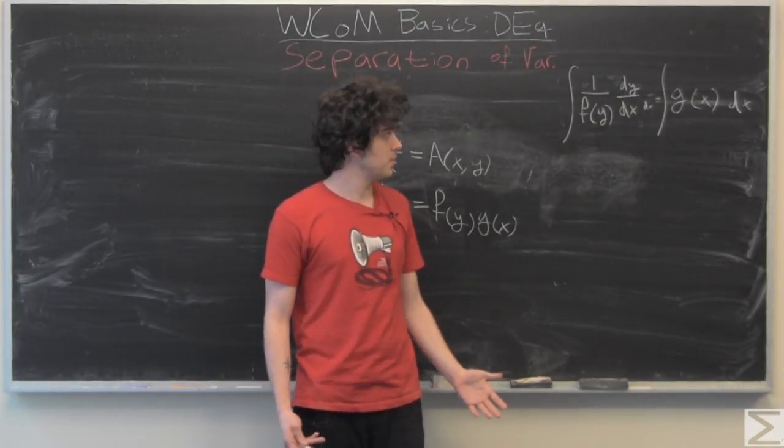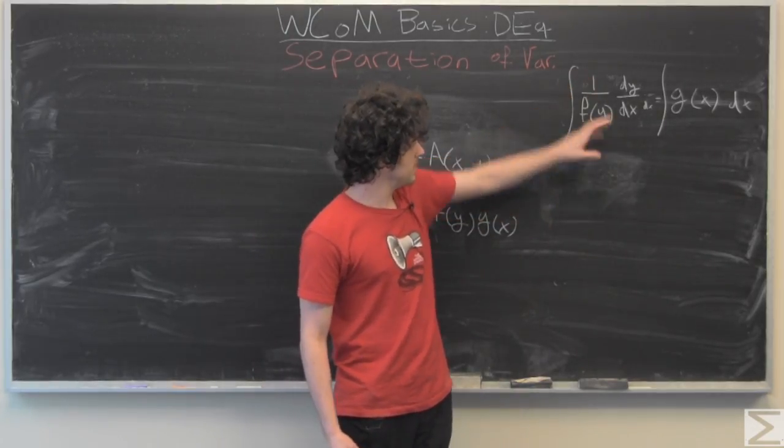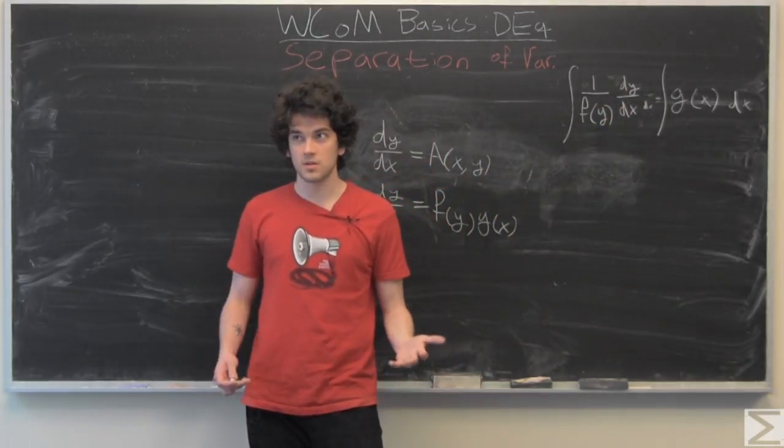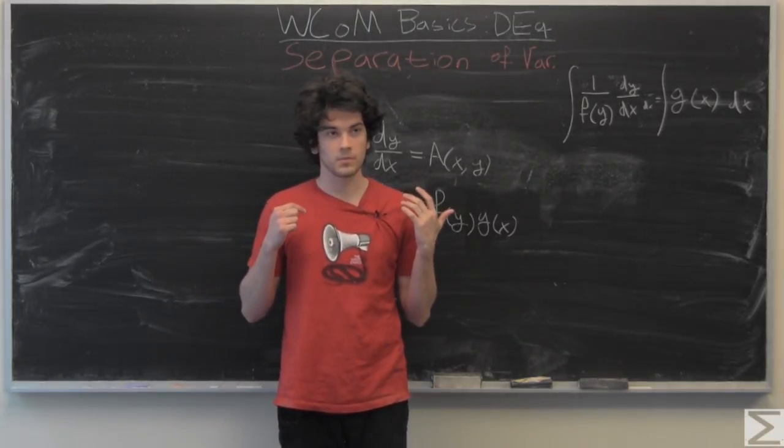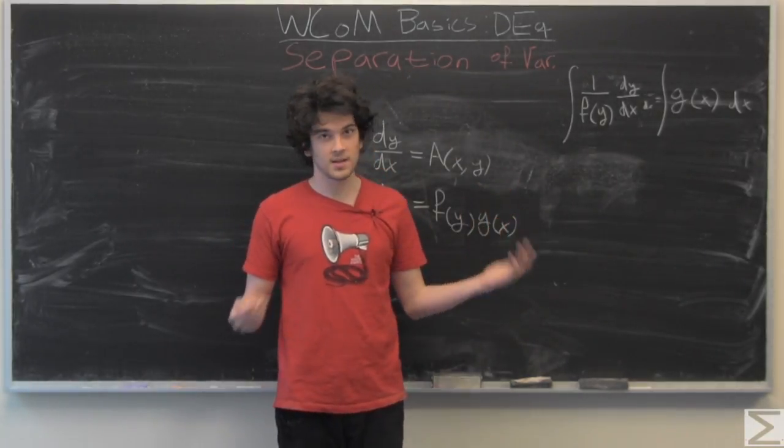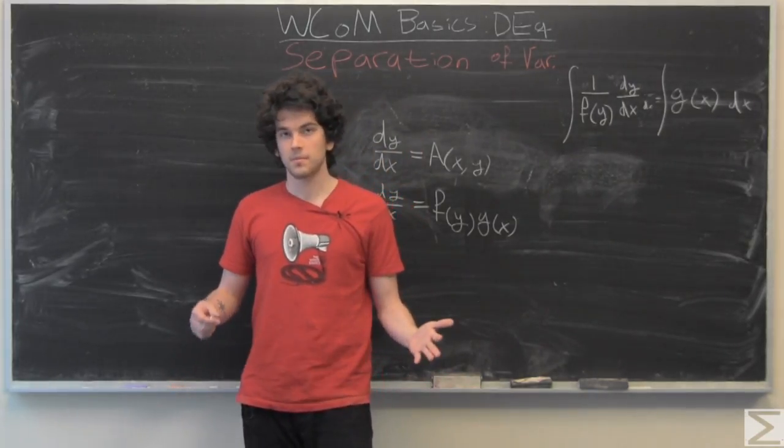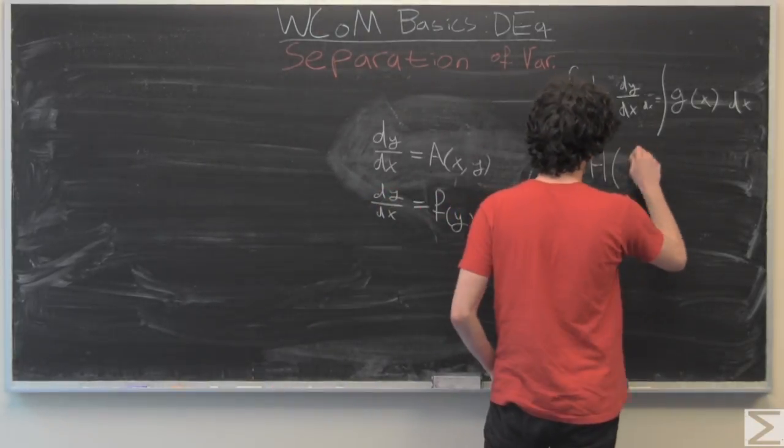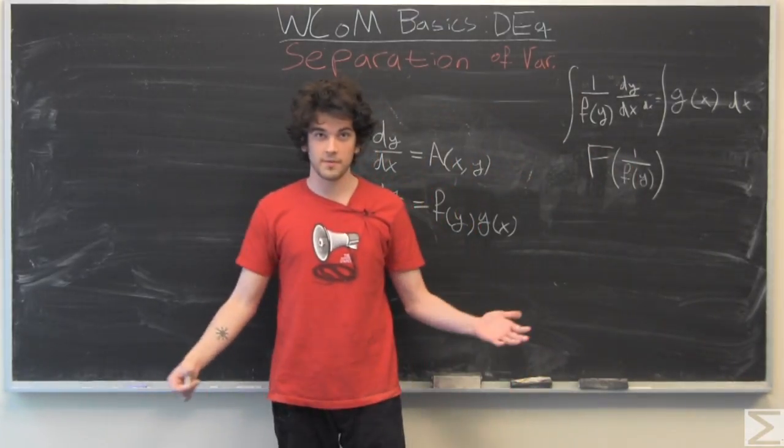That should remind you of the chain rule, because we're going to differentiate something, get that something, get the derivative of that, and then get the derivative of the inner function. And what returns itself when differentiated is the antiderivative. So we're going to make a function, the antiderivative of, say, our arbitrary function f of y, so we'll call that function capital F.